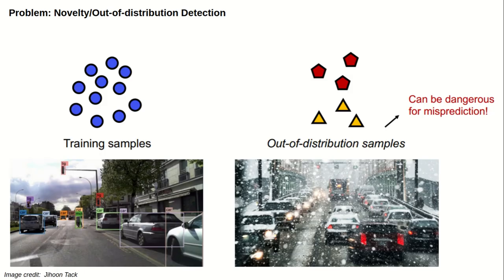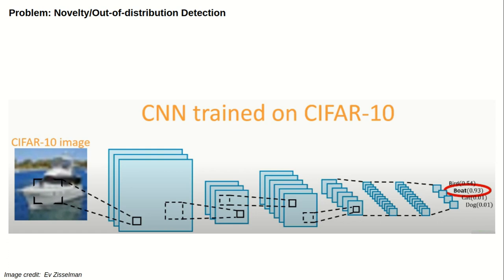So what is out-of-distribution detection? Assume in the left image that you are training an object detection model for cars and it works really well, capturing all cars on your training and validation data collected in the summer. However, in the right image, you deploy it in a bad winter and it totally fails. This also applies to classification tasks — assume training an image classification model on CIFAR and then testing it on MNIST, although it doesn't even have a class for digits.